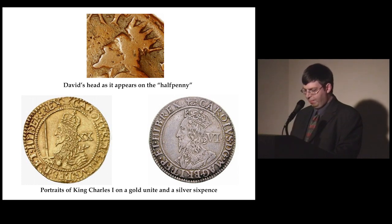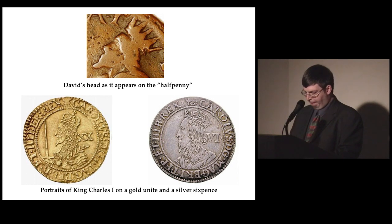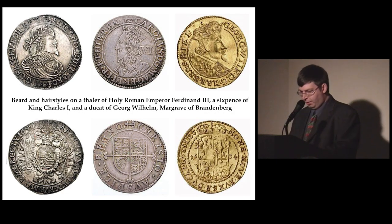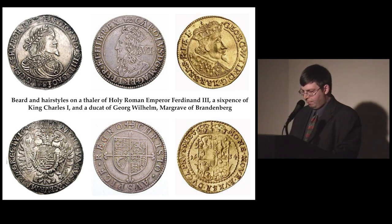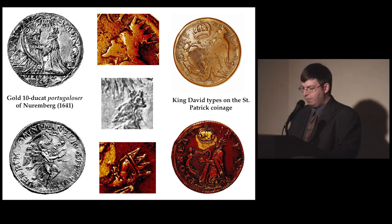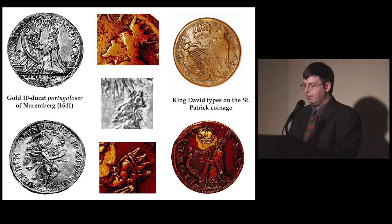There can be little question that the hair and beard of the David figure on the halfpenny are reminiscent of some numismatic portraits of Charles I. But these same features also appear on the portraits of the king's European contemporaries, such as the Holy Roman Emperor Ferdinand III, Georg Wilhelm the Elector of Brandenburg, and many others. More importantly, a similar style of hair and beard is worn by a harp-playing David on a Nuremberg Ten Ducat Portigalosa of 1641. Since a portrait of Charles I is no more likely to appear on a gold multiple of Nuremberg than that of Ferdinand III is to be found on Irish coppers, it seems clear that the beard and hairstyle cannot be taken as personal identifiers of Charles I, but should instead be understood as generic elements of royal fashion in the first half of the 17th century.